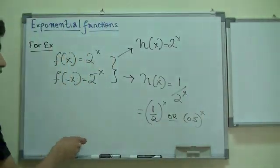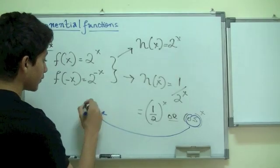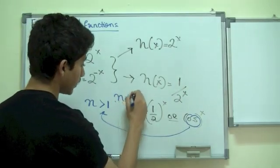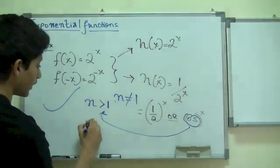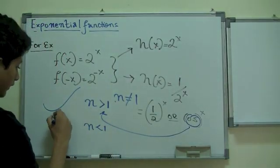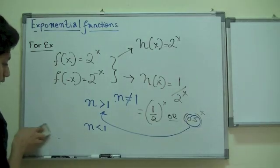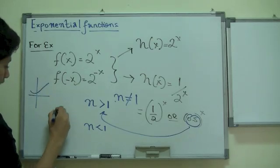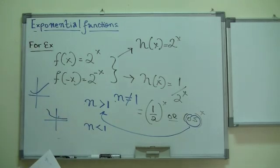Is that if this number over here, let's say n number, is greater than 1. It cannot be equal to 1. If it's greater than 1, then it's a growth. If n is less than 1, then it's a decay. When you have growth, it would basically look like this. Something along those lines.